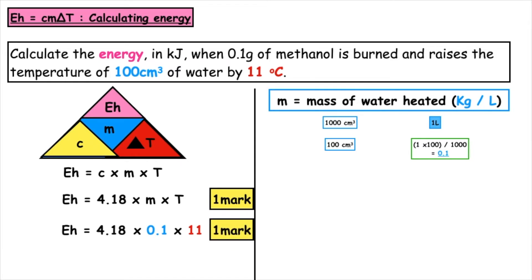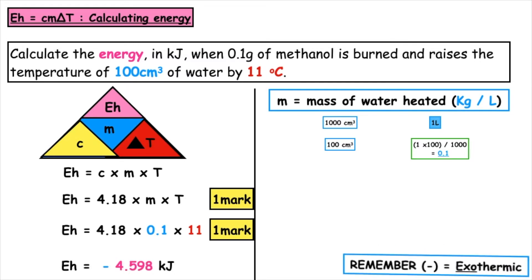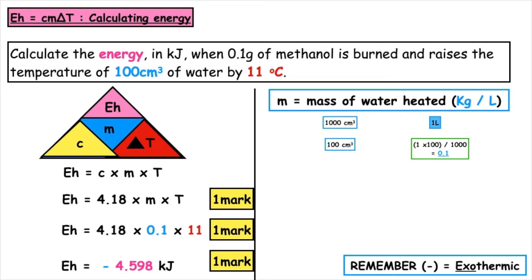When we put that into the calculator, we get an energy released of 4.598 kilojoules. I've marked this as exothermic. You will not be penalised for omitting the negative sign at National 5, but exothermic reactions release heat energy, so the value would be negative.